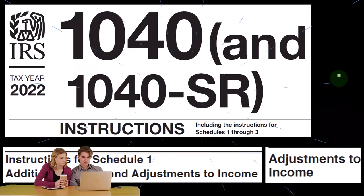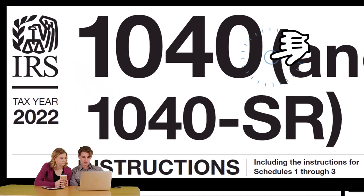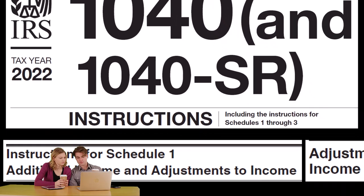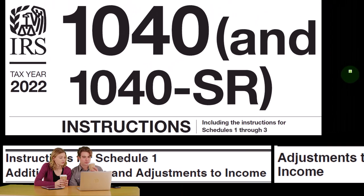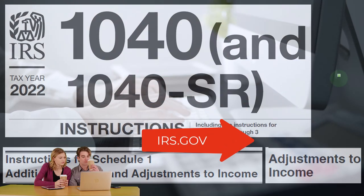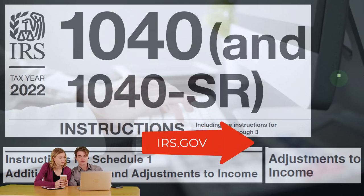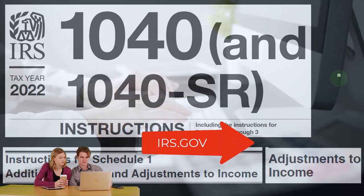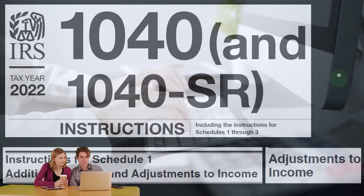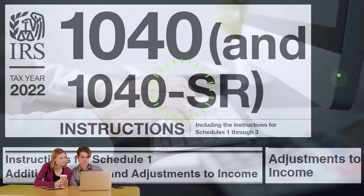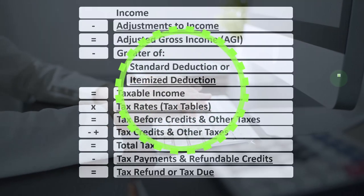Most of this information comes from the Form 1040 instructions, tax year 2022, instructions for Schedule One: Additional Income and Adjustments to Income — the adjustments to income section — which you can find on the IRS website, irs.gov.